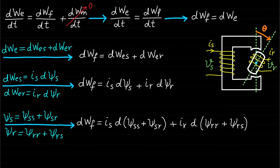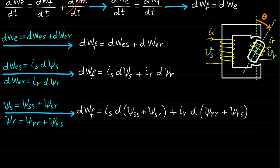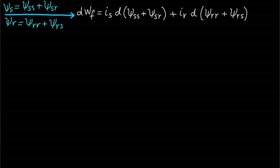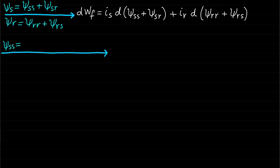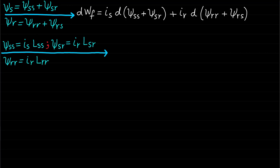Please review the previous lecture to get a better idea about these magnetic field linkages. If we assume that the magnetic system is a linear magnetic system, the magnetic field linkages can be expressed in terms of inductances whose values depend on rotor position theta. That means: ΨSS = Is·LSS, ΨSR = Ir·LSR, ΨRR = Ir·LRR, and ΨRS = Is·LRS.